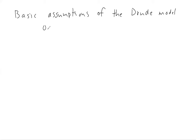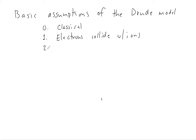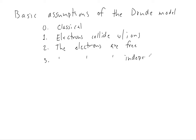Remember, the first assumption is that electrons are classical — we began to relax that assumption when we considered the Sommerfeld model. The next assumption is that the electrons are free: they don't interact with the ions except during collisions. The next one is that the electrons are independent. And the last assumption is that they reach thermal equilibrium via collisions.